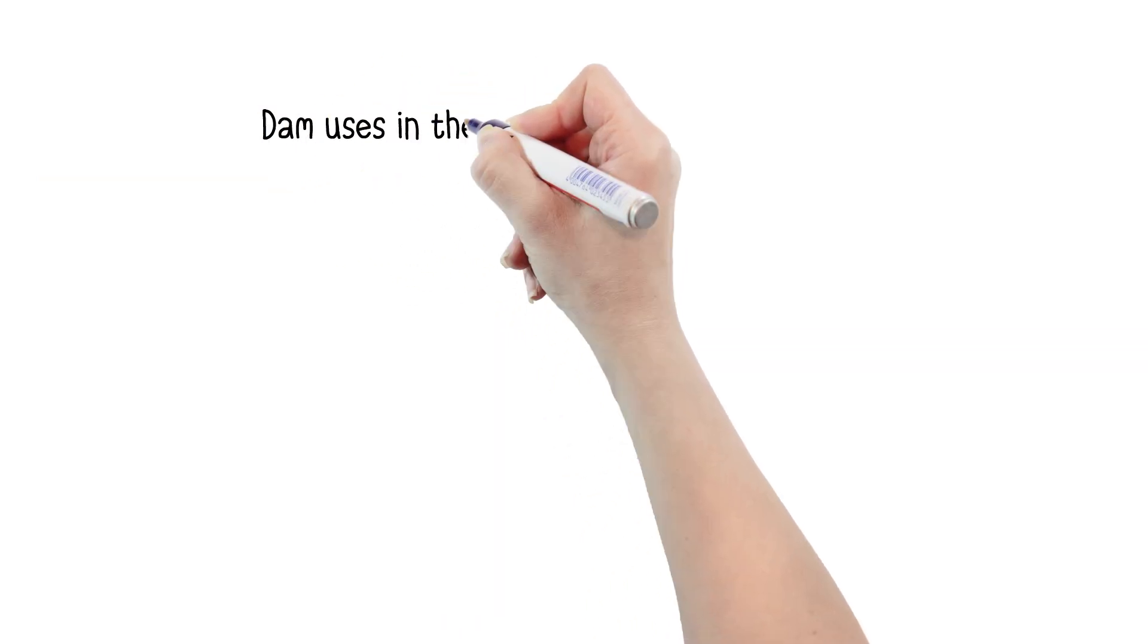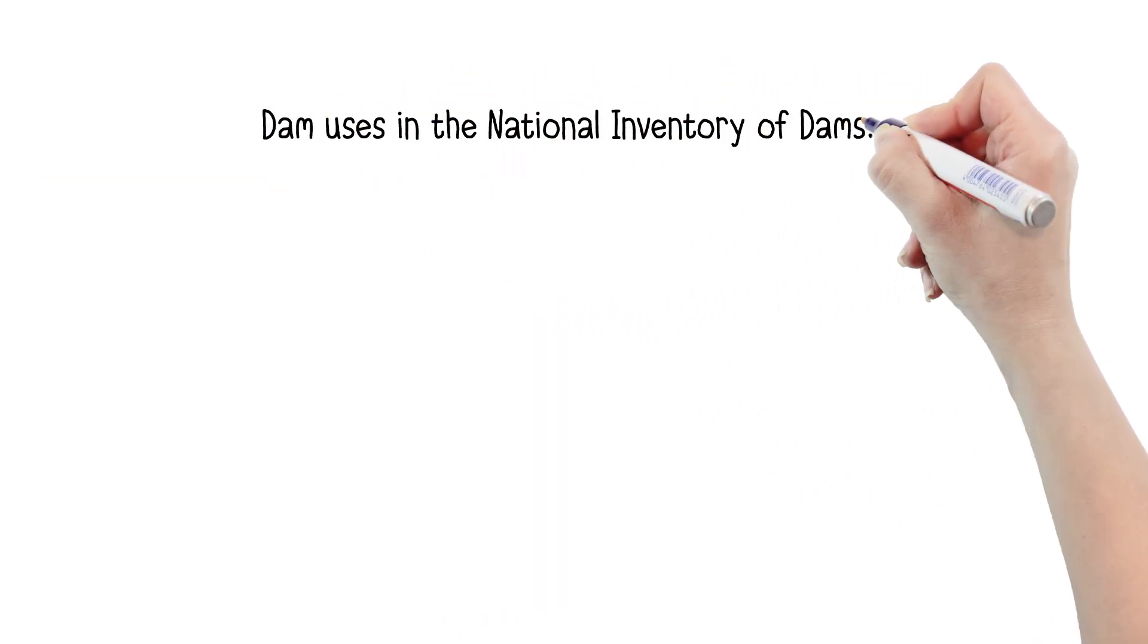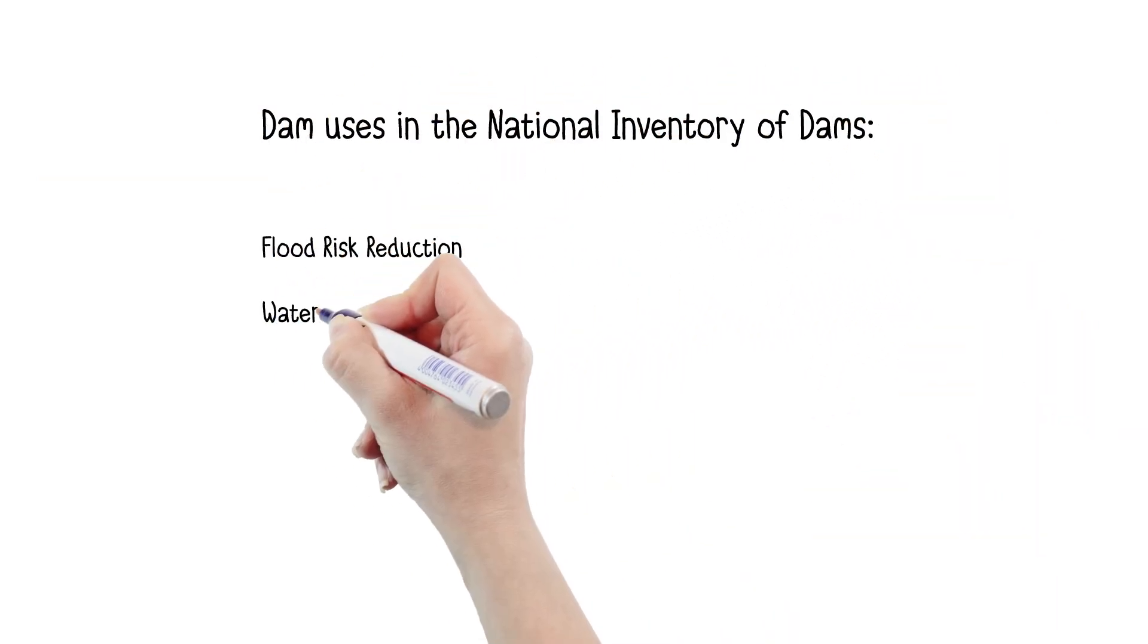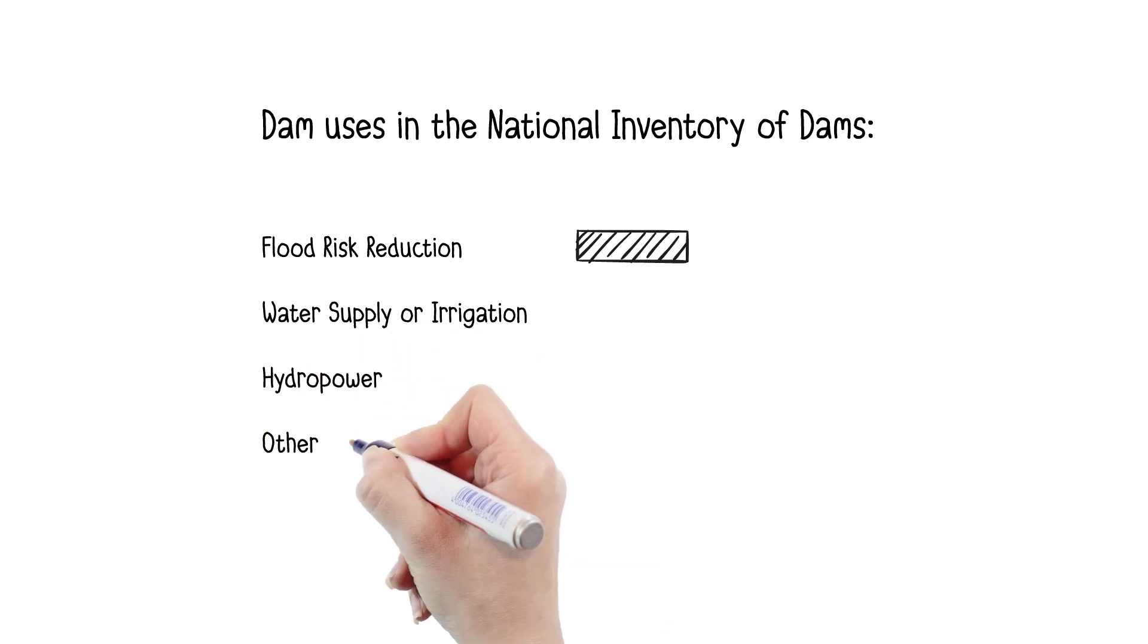Despite common perceptions, less than 3% of dams in the country are used to provide hydroelectric power, 19% are used for flood risk reduction, and 18% for water supply and irrigation.